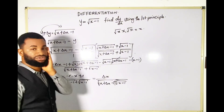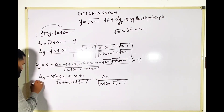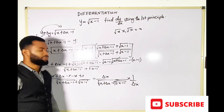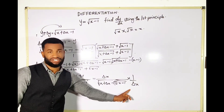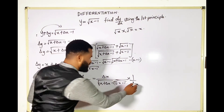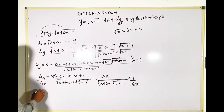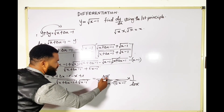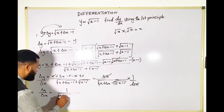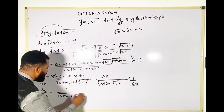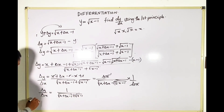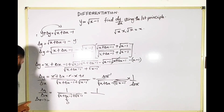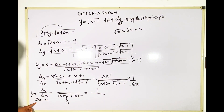Now I've done what I needed to do. The next step is to divide both sides by Δx. Dividing by Δx is the same as multiplying by 1/Δx — so Δx cancels, and I have Δy/Δx equal to 1 all over root (x + Δx − 1) plus root (x − 1). Now I take the limit as Δx tends to zero.